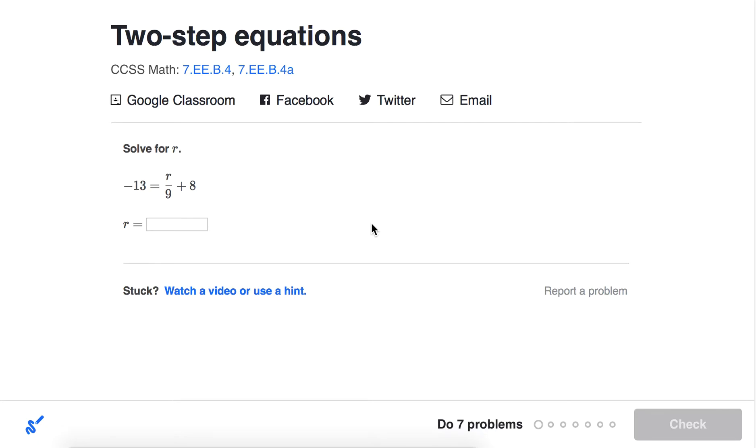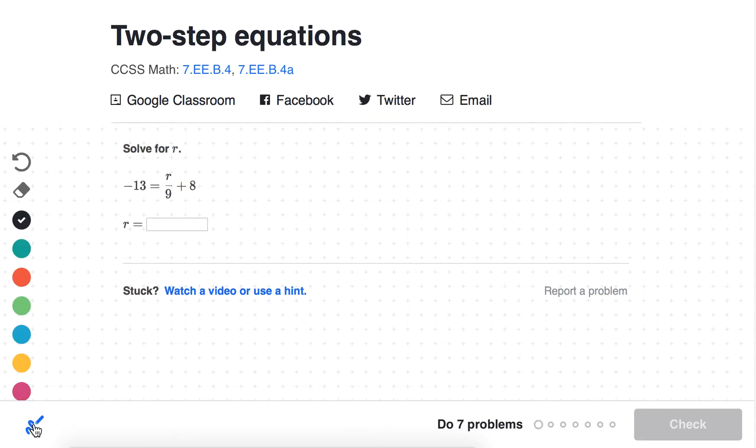In this video, we're going to look at solving two-step equations on Khan Academy. The key for solving two-step equations is to keep in mind that the equal sign signifies balance. It tells you that what's on the left side of the equation is equal to what's on the right side.